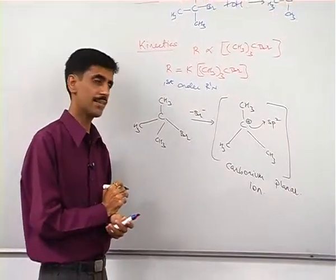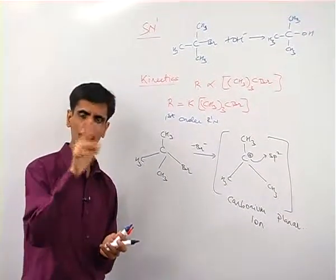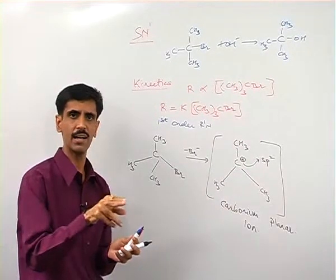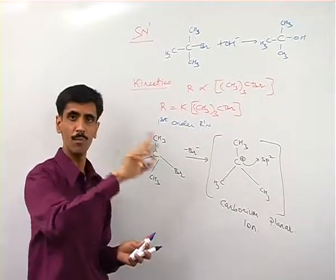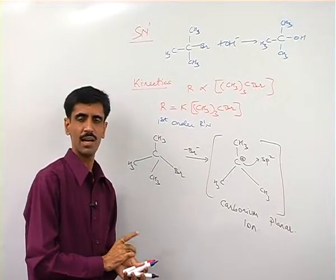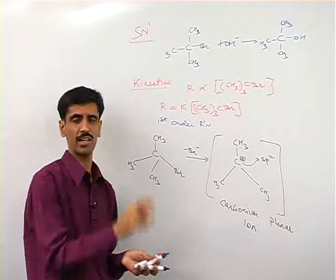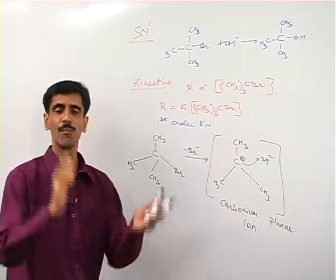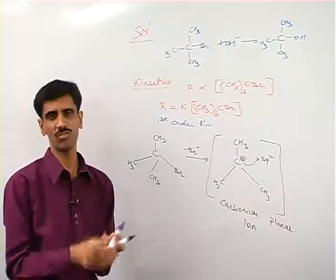Now as a result of this planar geometry what is going to happen is in the second step, OH minus will attack this positively charged carbon. So it can attack from both the sides either from the backside or it can attack from the front side. Both possibilities are there. And both the possibilities are going to be there in equal amounts.